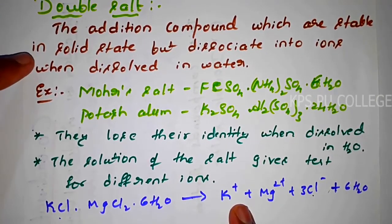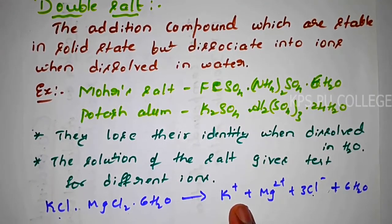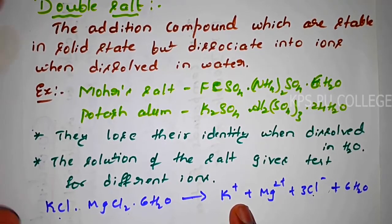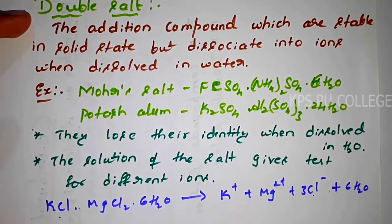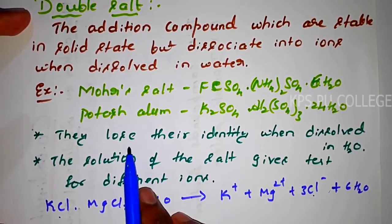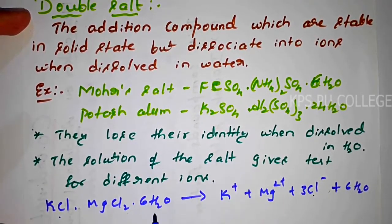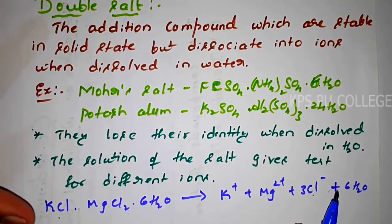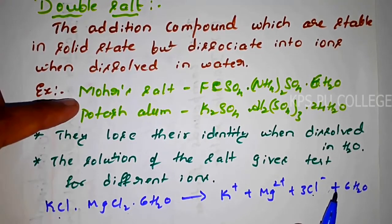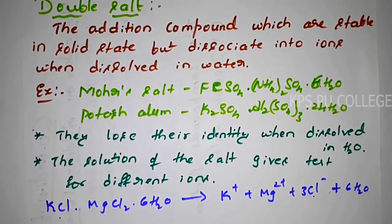To summarize double salts: they are stable in solid state, but when dissolved in water they undergo dissociation, free ions are formed, and they lose their identity. Examples are Mohr's salt, potassium alum, and carnalite.